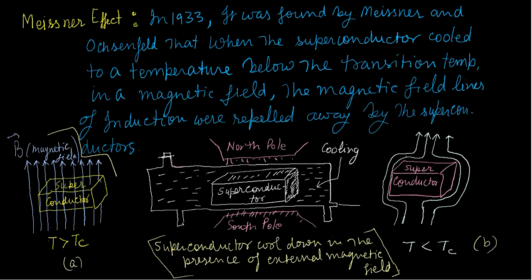In the earlier video, I discussed the critical magnetic field, critical temperature, and the critical current. Now in this section, I will discuss the Meissner effect, which was discovered by Meissner and Ossenfeld in 1933. When the superconductor is cooled to a temperature below the transition temperature in the presence of a magnetic field, they observed that the magnetic field lines of induction were repelled away by the superconductor. This phenomenon is known as the Meissner effect.